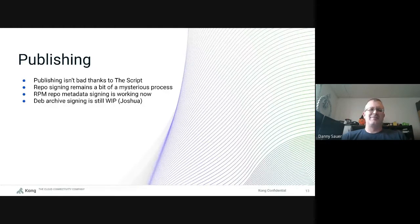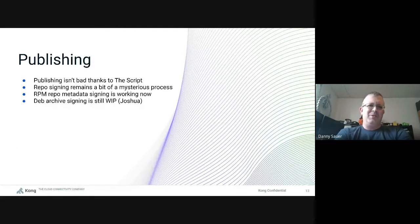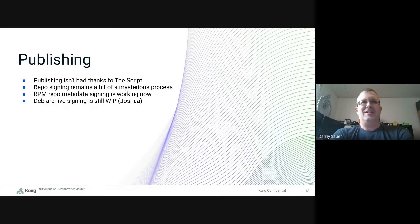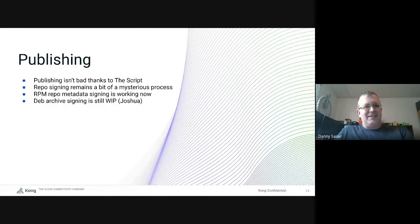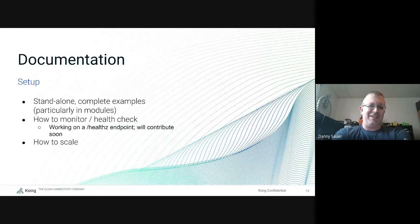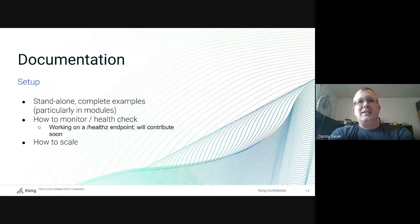Publishing content to Pulp was initially a little bit of a challenge, though not terribly bad, thanks to the script Joshua will talk about. Repo metadata signing still has a bit of mystery around it. We got RPM metadata signing working fairly early on. Joshua is currently working on Debian metadata signing — we're getting pretty close to having that actually working, but that's a place where a little more documentation might be helpful.